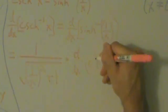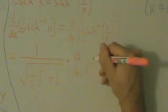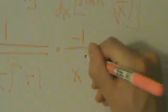The little guy is 1/x, which is x to the negative 1. Using the power rule, the derivative is negative 1 times x to the negative 2, which is the same as negative 1 over x squared.